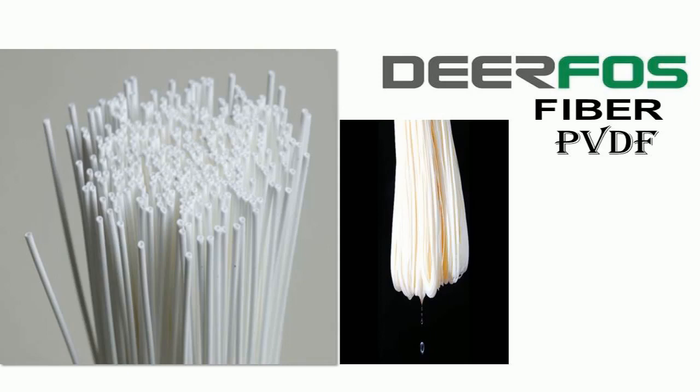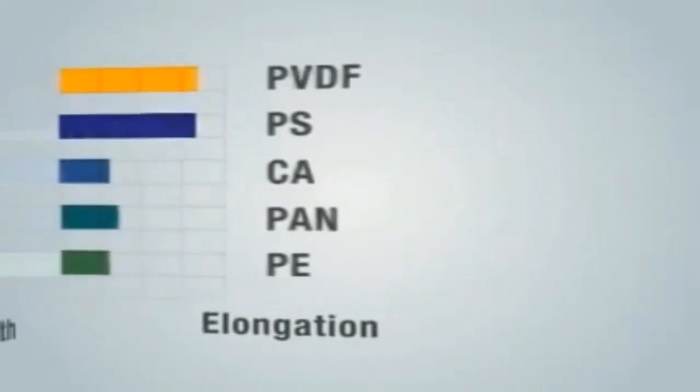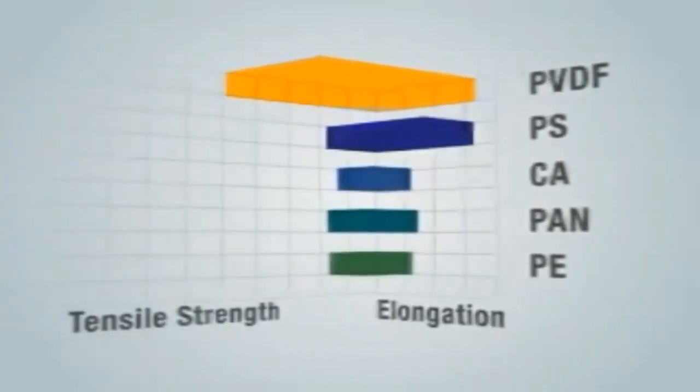The Deaphos ultrafiltration module uses asymmetrical hollow fiber made from hydrophilic PVDF material, which is resistant to most chemicals and has outstanding fouling resistance. Deaphos membrane structures are made of skin and support layers to give low fouling, high flux, and high strength.